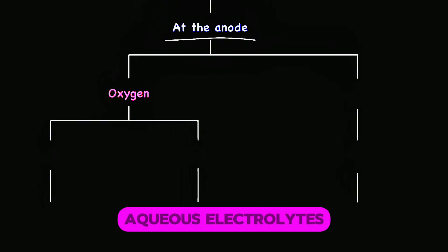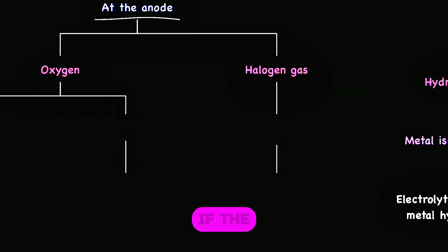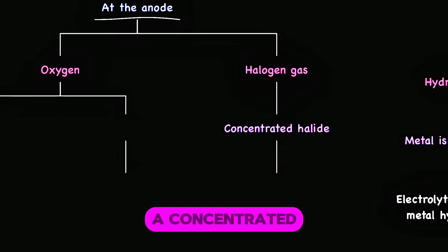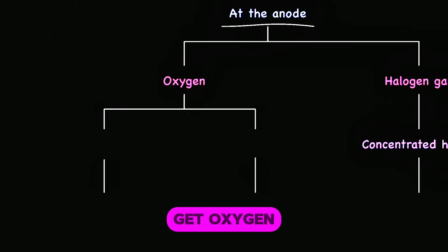Products at the anode for aqueous electrolytes are halogens if the electrolyte is a concentrated solution of a halide. You get oxygen at the anode in one of two cases.